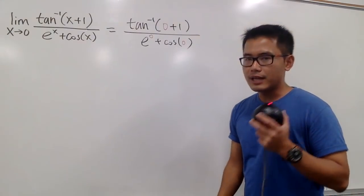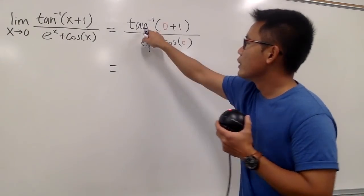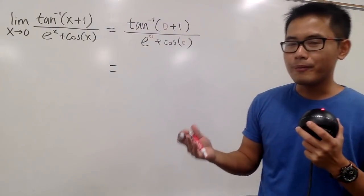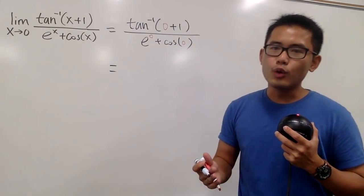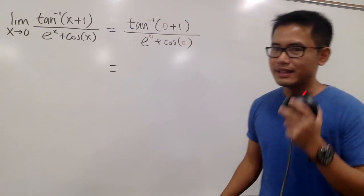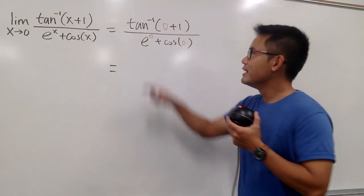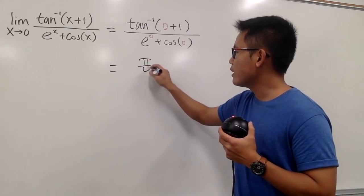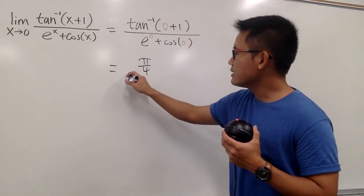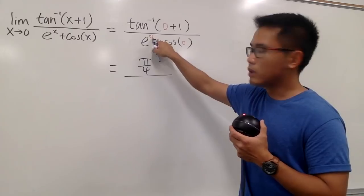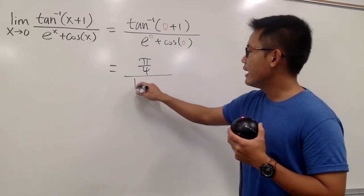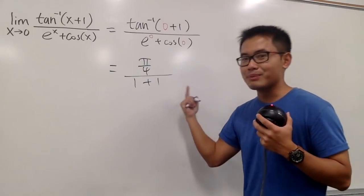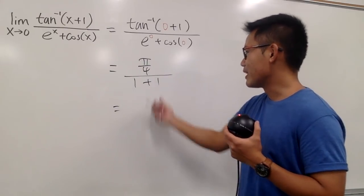What do we have on the top? The inverse tangent of 1 — tangent of what angle gives you 1? The answer is π/4. So the inverse tangent of positive 1 gives positive π/4. On the denominator, e to the 0 is 1, and cosine of 0 is also 1, so we have 1 plus 1, which equals 2 on the bottom.